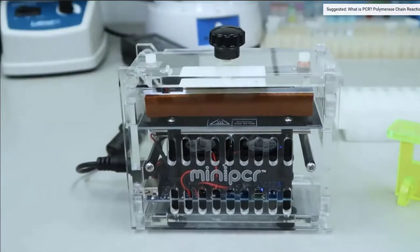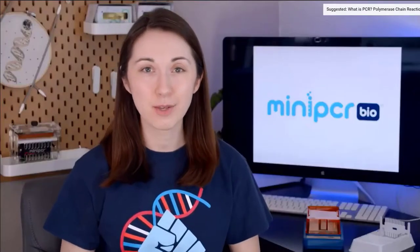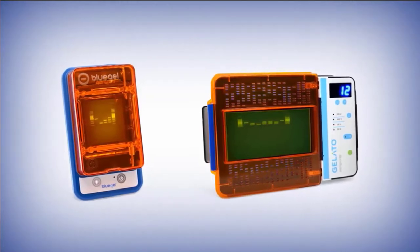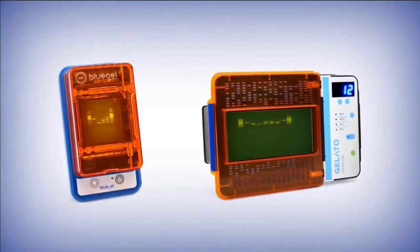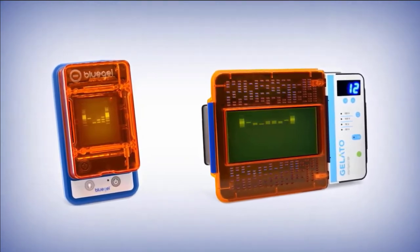You can learn more about PCR by watching our video linked below. Gel electrophoresis is an invaluable tool in the molecular biology lab, allowing us to visualize and analyze DNA. Blue gel and gelato electrophoresis and visualization systems from Mini-PCR Bio make this process efficient, easy, and economical. To find out more about the blue gel system and Mini-PCR Bio learning labs that can help to bring gel electrophoresis to your classroom.